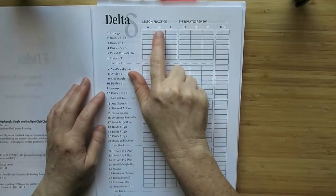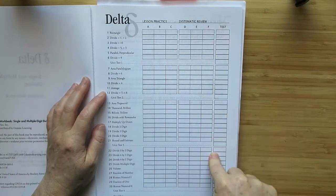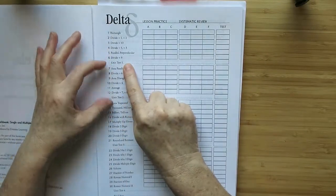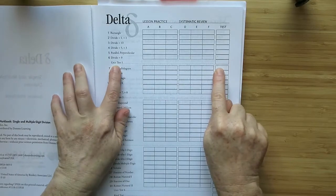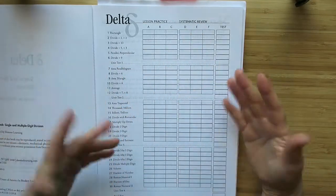There is a check-off in the front if you want to make sure that they get all of their lesson practices and their systematic reviews and then their test. Also after every six chapters there is a unit test that you can give your child to see if they've still mastered all of the concepts from that section.